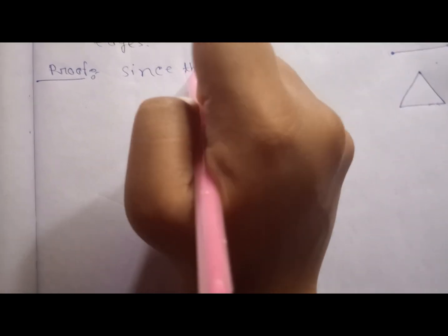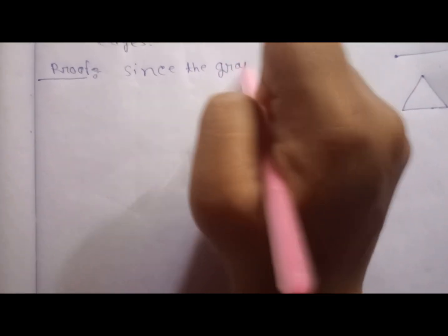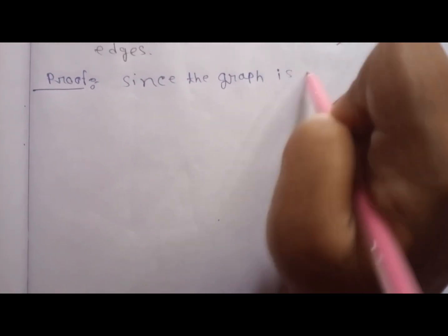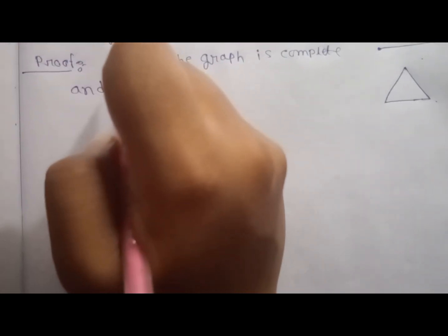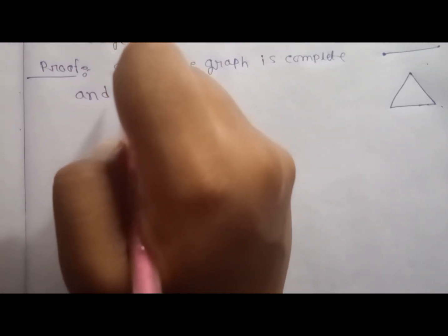The graph is complete and since there is no loop or parallel edges, every vertex of the graph has n minus 1 adjacent vertices.